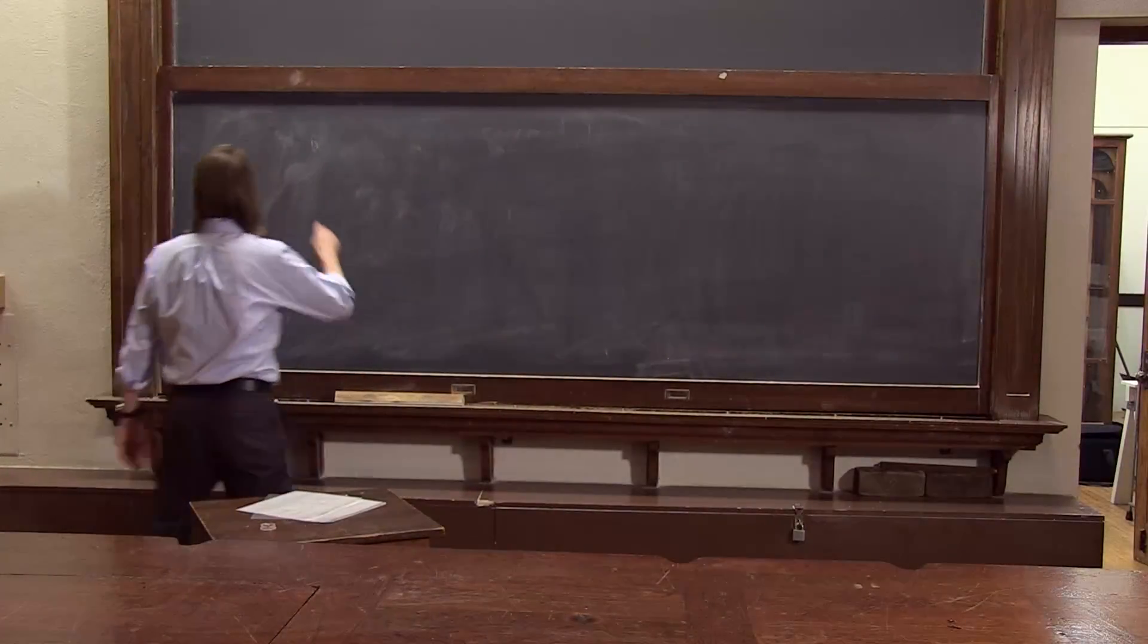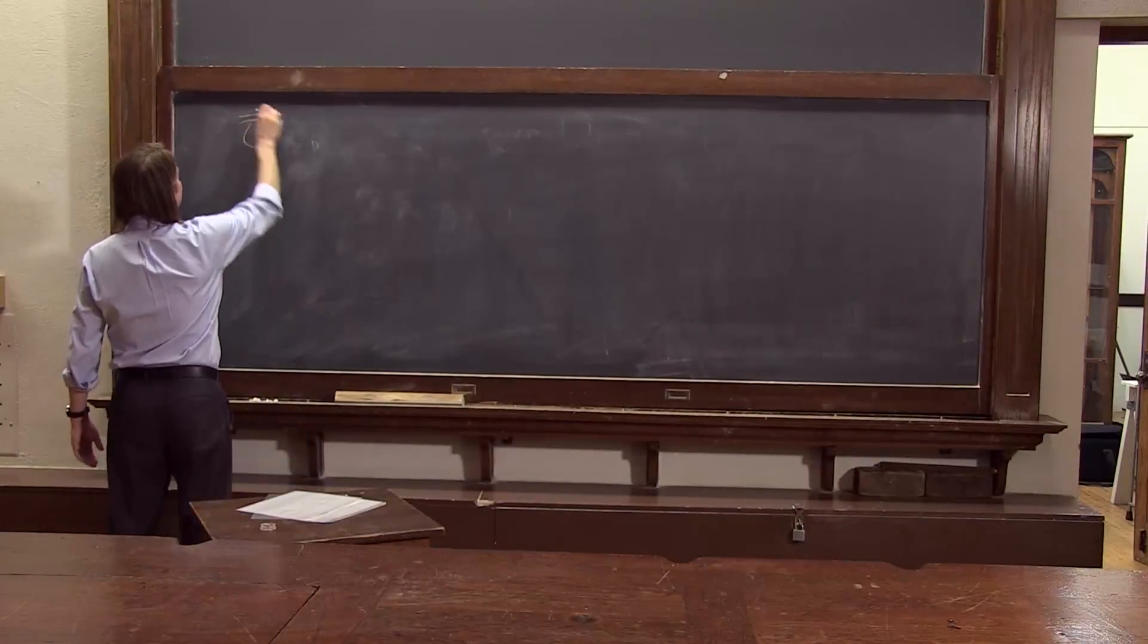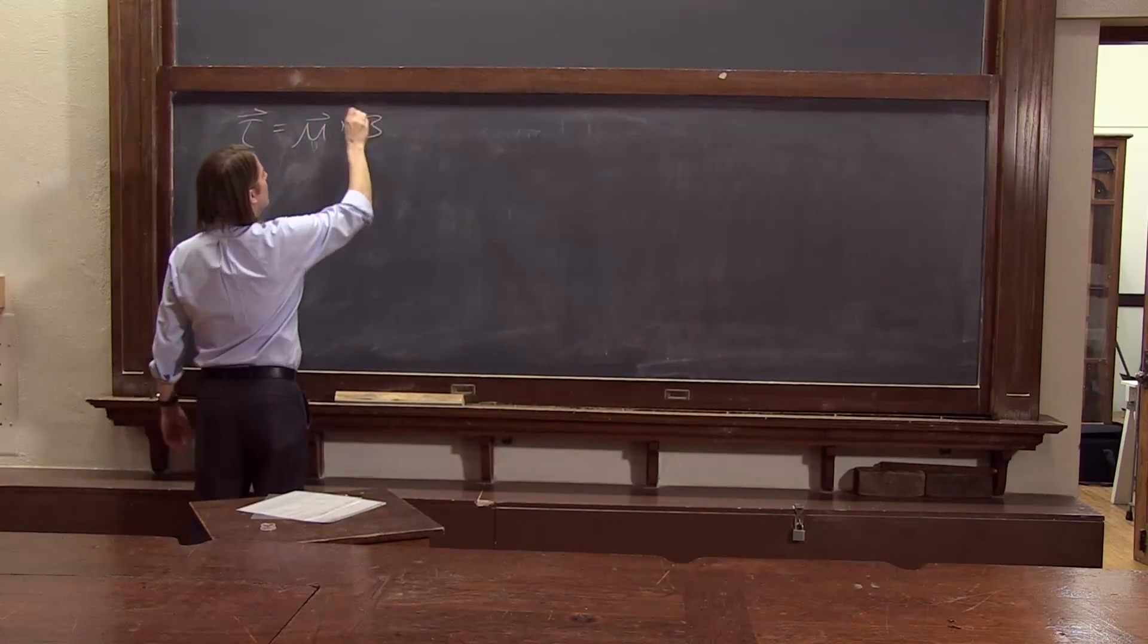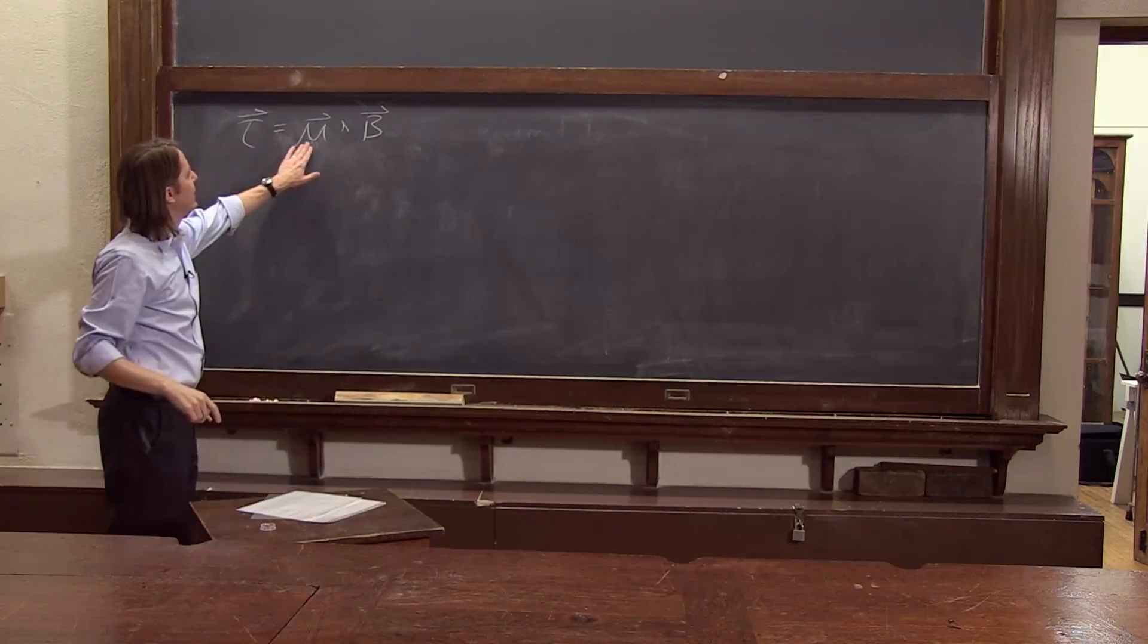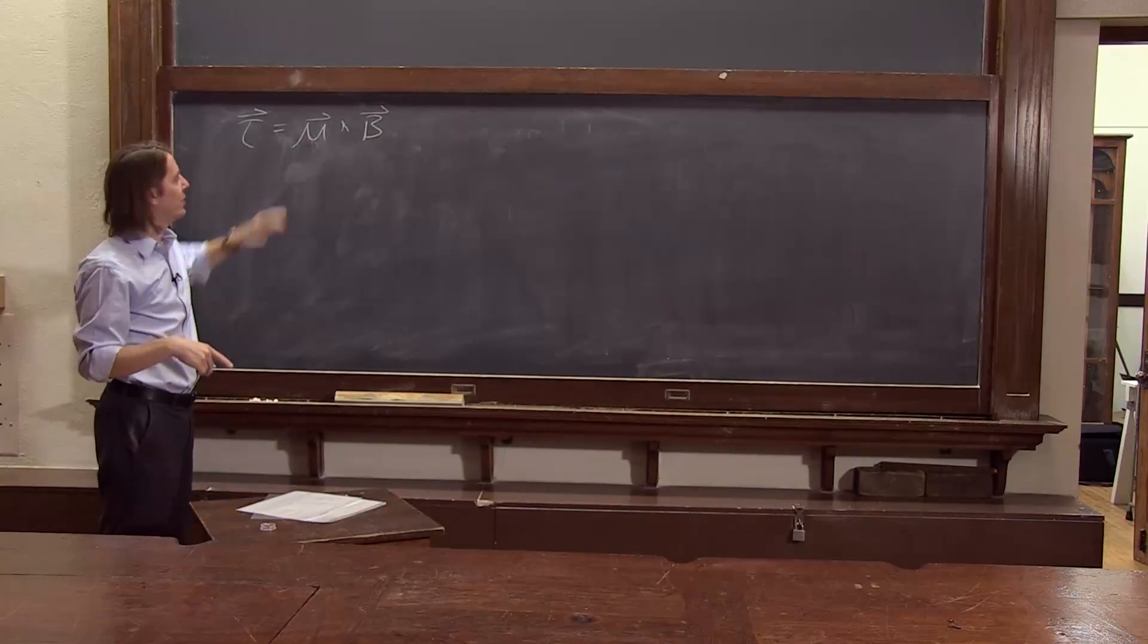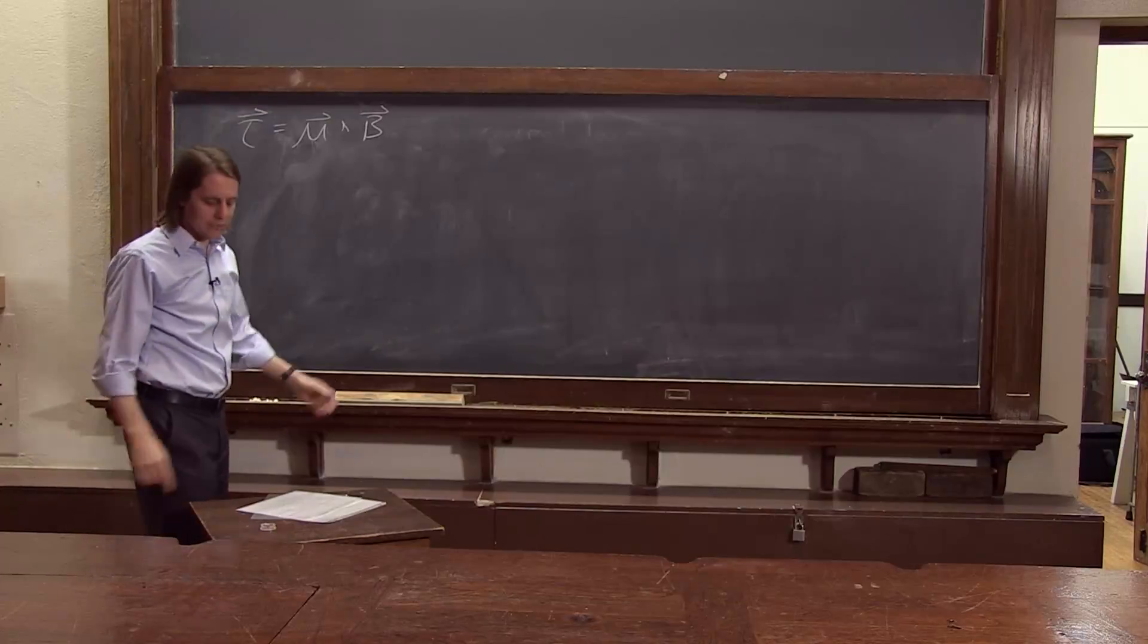We can rewrite our torque equation in terms of the magnetic moment as simply μ cross B. Remember, μ, the magnetic moment, is just I times the A vector. That's what we use to characterize how magnetic something is.